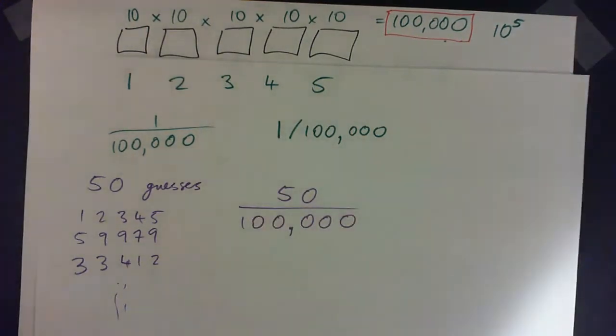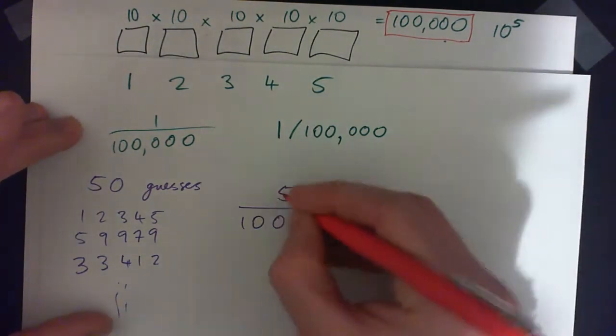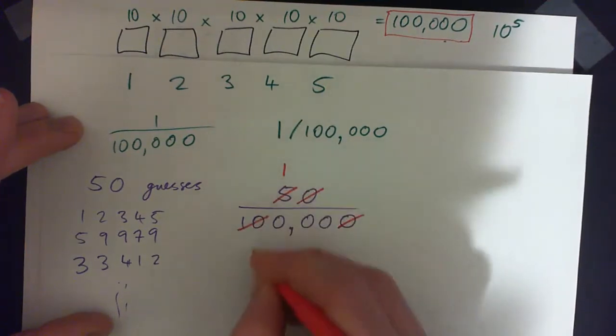Now we can reduce that in lowest terms. So we can divide the top and bottom by 10, cross off the zeros and then go 5 into 5 goes once, 5 into 10 goes twice.